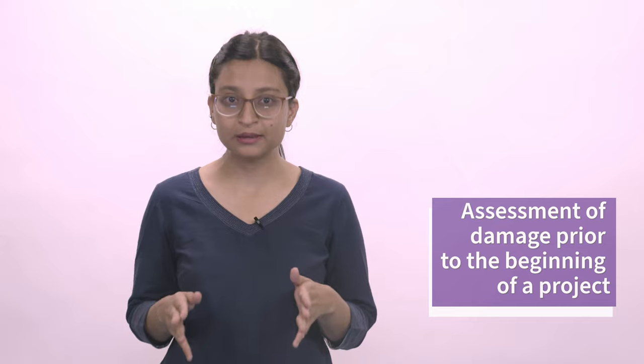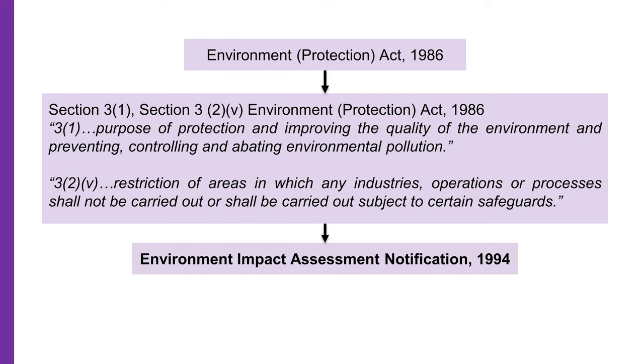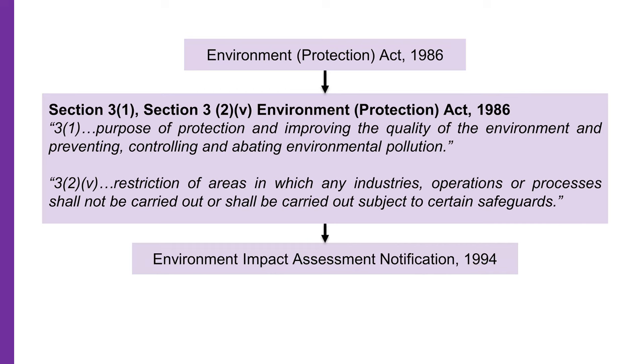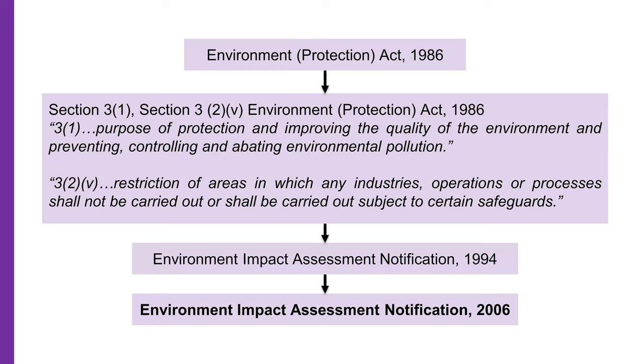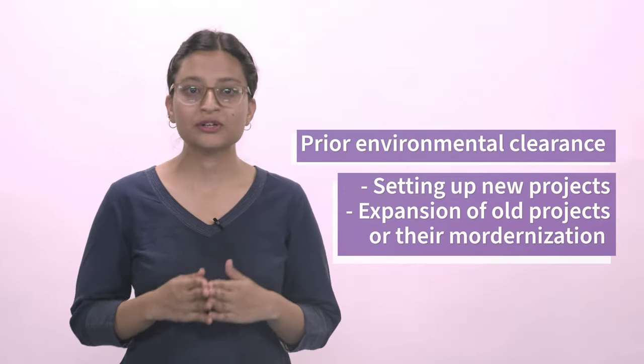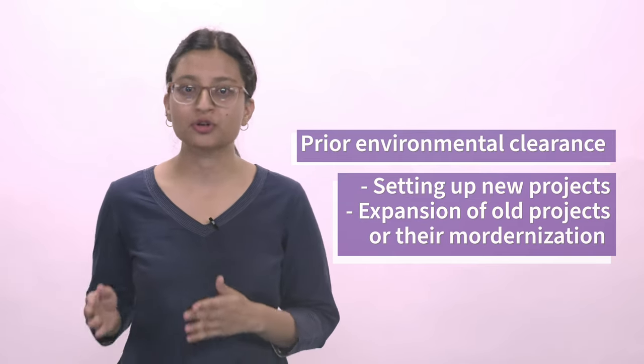EIA is an environmental regulatory framework founded on these principles. Its key feature is that there should be an assessment of damage made before a project begins. This concept first originated in the United States in the 1970s when a dedicated legislation, the National Environment Policy Act (NEPA), was enacted in 1969. Gradually, a similar approach was adopted by many other countries. In India, the Environment Impact Assessment Notification was first adopted in 1994 under Section 3 of the Environment Protection Act 1986. At present, the Environment Impact Assessment Notification 2006 is in operation. EIA establishes a mandatory Prior Environmental Clearance regulatory scheme for setting up of new projects and for expansion of old projects and their modernization.